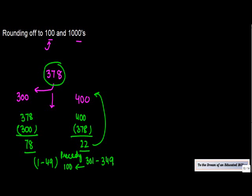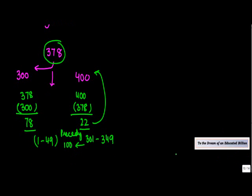Whereas, if the number or the distance is between 51 to 99, and how does this come? Obviously, between 300 and 400, what you will have is 301 to 399.